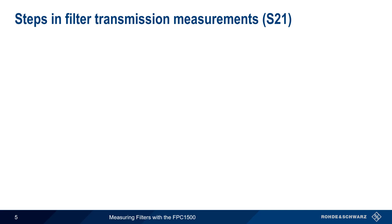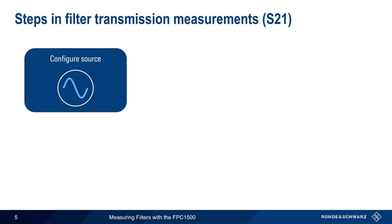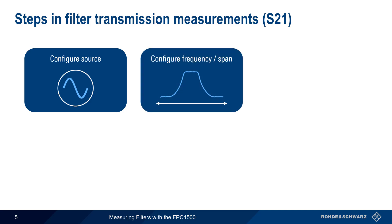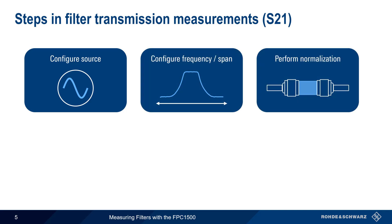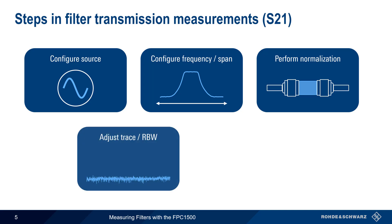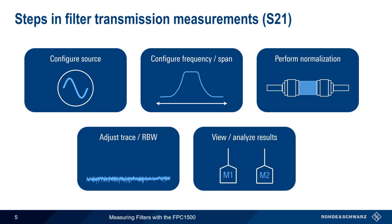There are five basic steps in making filter transmission measurements: configuring the source or tracking generator, configuring the measurement frequency range, performing normalization, adjusting the trace type and/or resolution bandwidth, and viewing or analyzing the results. Let's start with configuring the source.